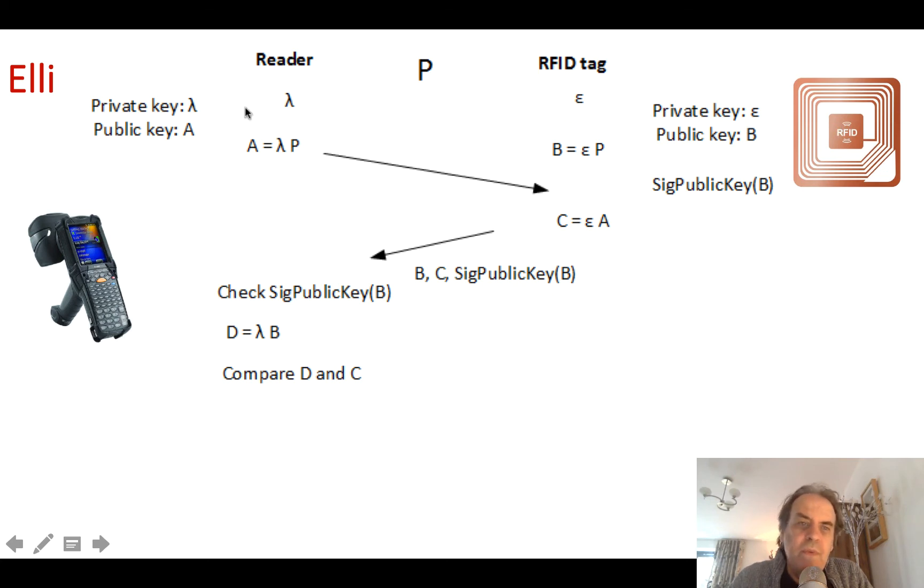The way we set up the ELI method, so the ELI method uses a Diffie-Hellman elliptic curve method, is that each tag has a random number generated for it, in this case epsilon. If this is epsilon and we take a point P on the elliptic curve, then B becomes the public key or the public value that we can distribute.